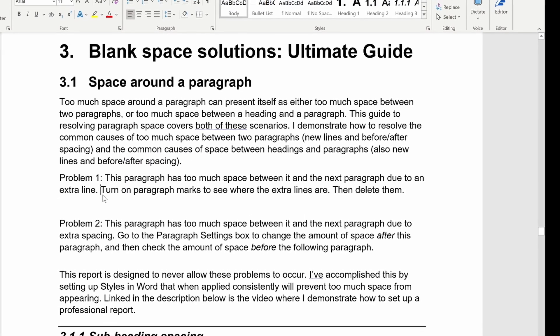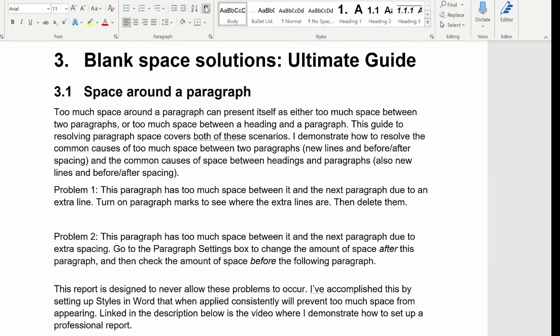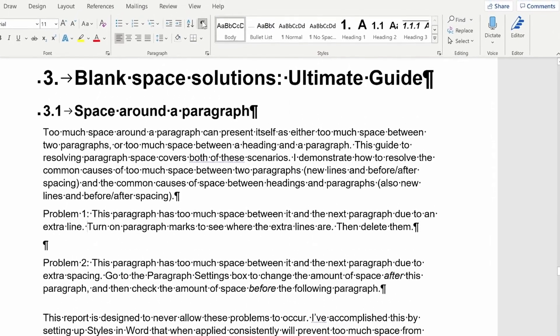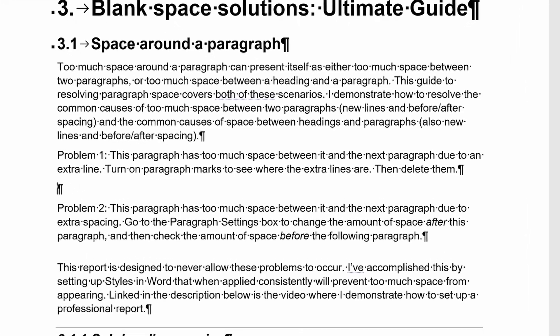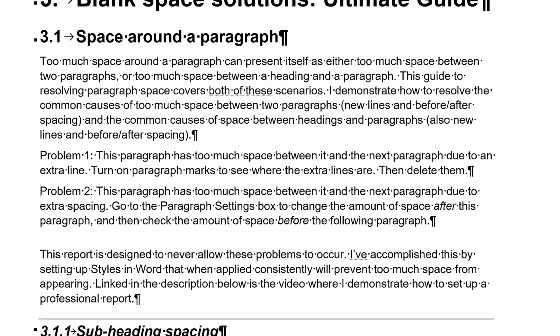The number one reason I've found for too much white space between your paragraphs in Word is simply that there is an extra line there. The easiest way to fix that is to delete it. To identify that, come up to the top of the screen and click on the paragraph mark to show all the formatting information in the Word document, and straight away we can see there's an extra line. So we simply remove that line to remove the white space.